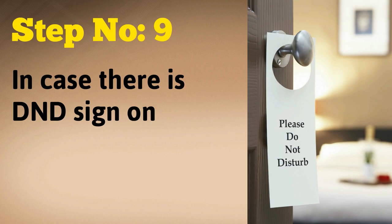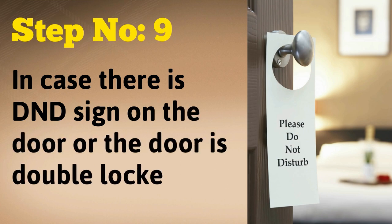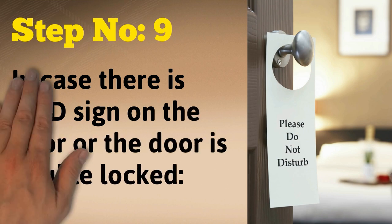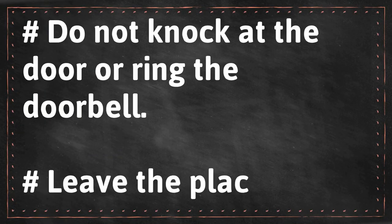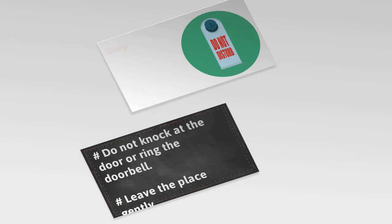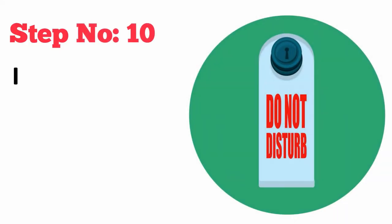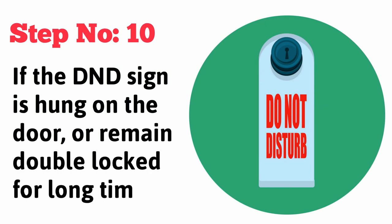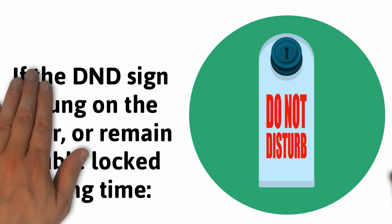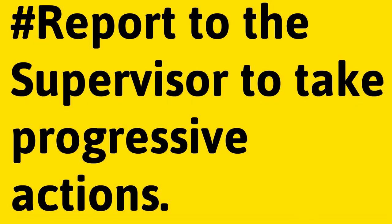In case there is a Do Not Disturb sign on the door or the door is double locked, do not knock at the door or ring the doorbell — leave the place gently. Step number 10: if the Do Not Disturb sign is hung on the door or the room remains double locked for a long time, report to the supervisor to take progressive actions.